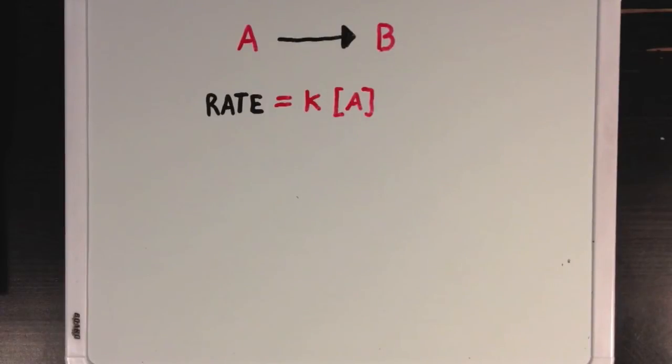For our sequence that I mentioned before, E + S going to ES going to E + P, we'd have two reactions going on, 1 and 2, which would each have their own rate equation.